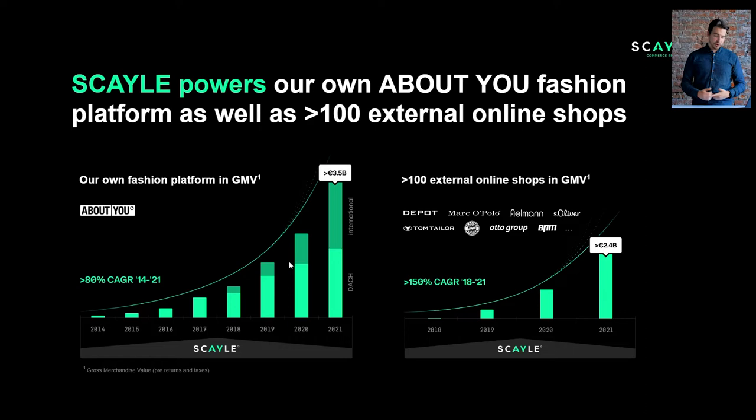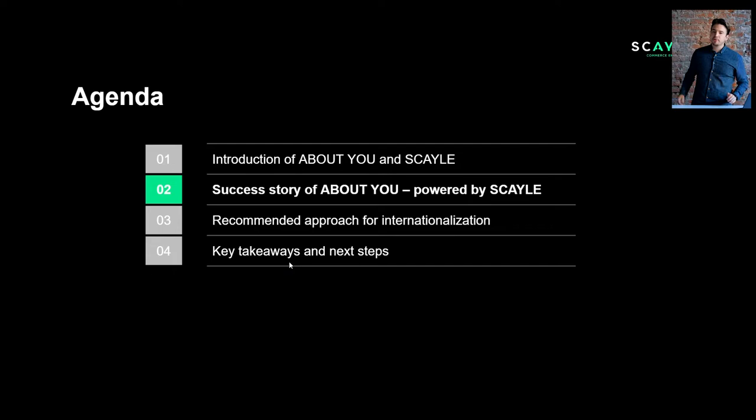Some of the bigger external brands are Marco Polo and S. Oliver within the fashion space, but we are also active in the sports segment with Bayern Munich, or in the home and living space with Depot. Although we've only recently started to scale up the Scale business model, we are already at over 2.4 billion GMV with those external shops alone in 2021.